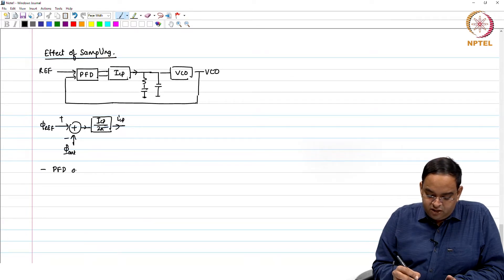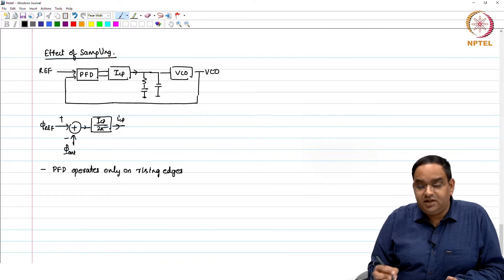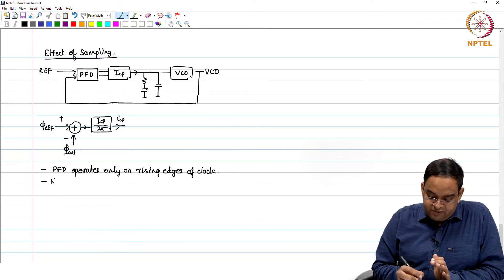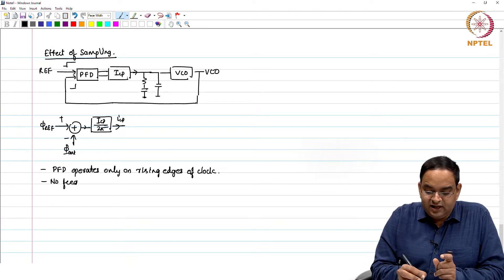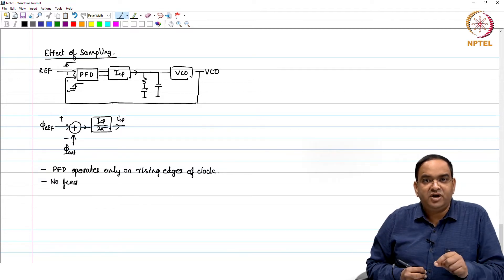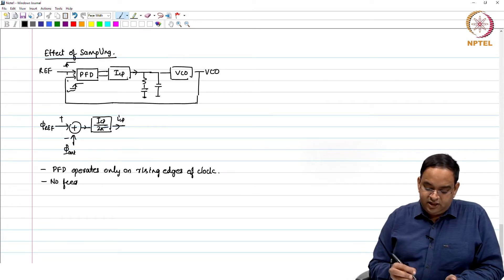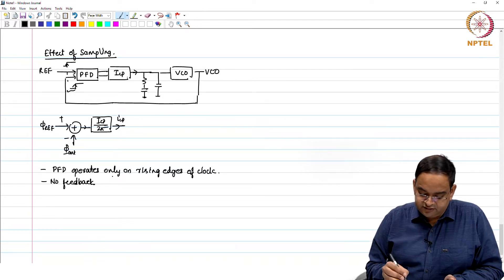The PFD operates only on positive or rising edges of the clock; it does not operate in between. There is no feedback between edges. Once you get the rising edge on the reference and the rising edge on the VCO, that phase error is taken into account. After that, even if the VCO frequency drifts, there is no feedback between two positive edges.